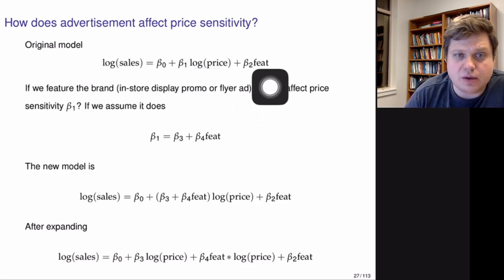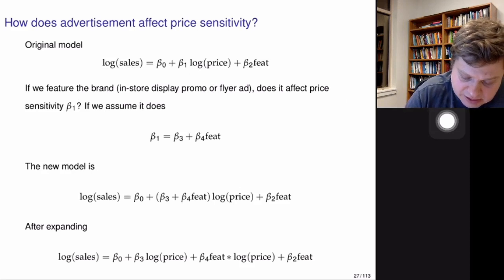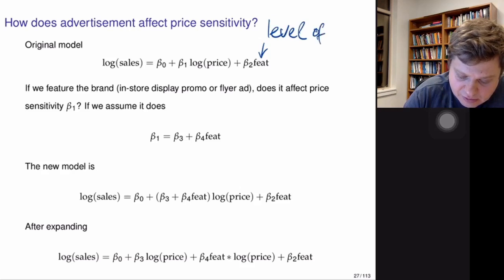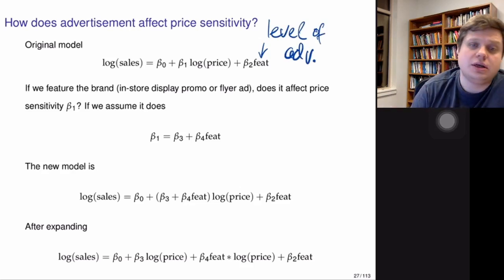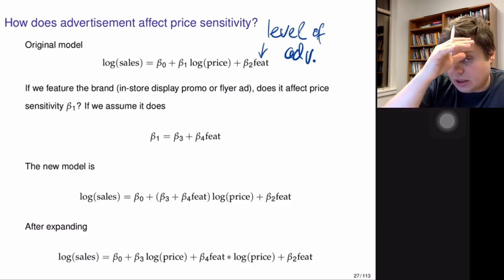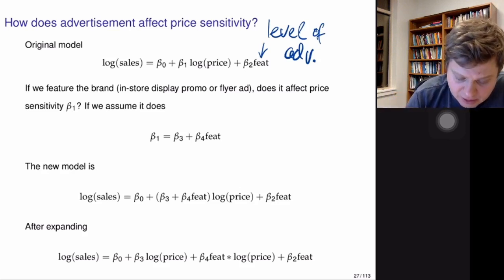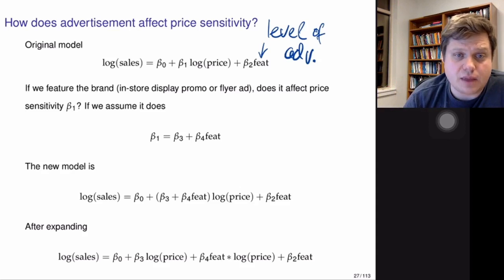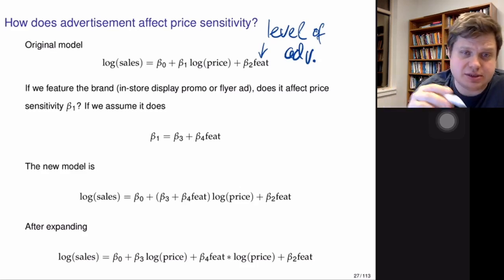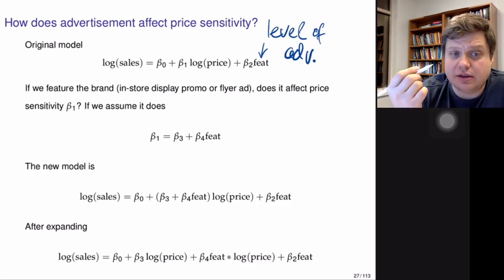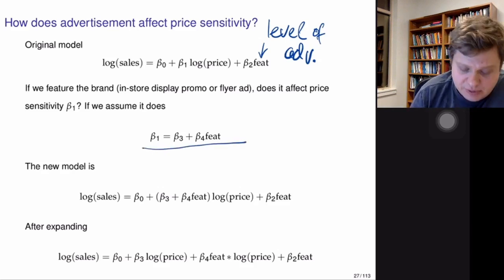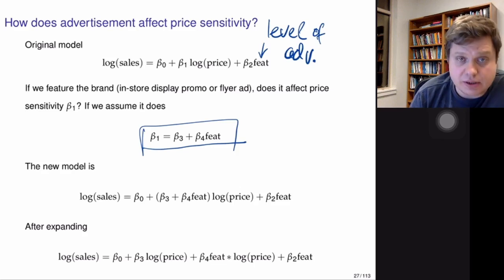Now we're interested in how advertisement affects price sensitivity. From exploratory analysis and scatter plots, we learned we should put both sales and price on the logarithmic scale. We also include the FEAT variable — short for 'featured' — which represents the level of advertisement, meaning whether the product was featured in the store through newspaper ads or in-store posters.